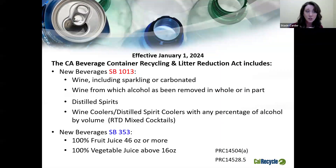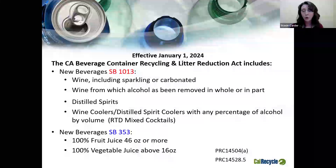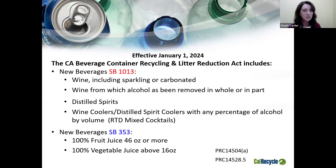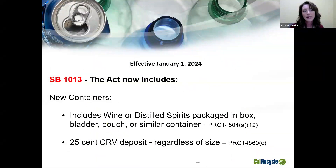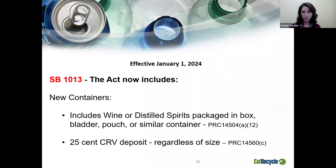SB 353 brings in new categories: 100% fruit juice 46 ounces or more, and 100% vegetable juice above 16 ounces. Fruit and vegetable juice were in the program before, but only for limited sizes — this has removed those size requirements, so all fruit and vegetable juices are now covered. Additionally, wine and distilled spirits when packaged in box, bladder, pouch, or similar are now covered. So if you have wine in a box with a bladder and spout, or a freestanding tetra pack containing wine or spirits, that's going to be in the program. The box, bladder, and pouch containers are specific to wine and distilled spirit products.